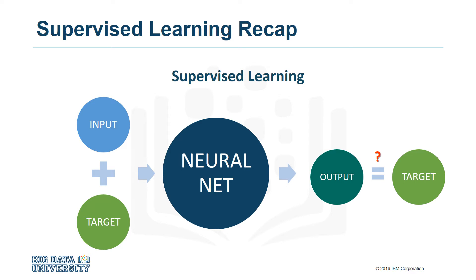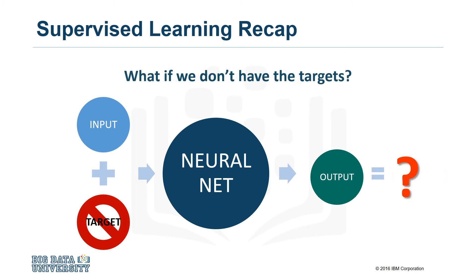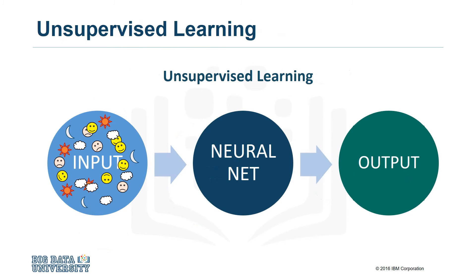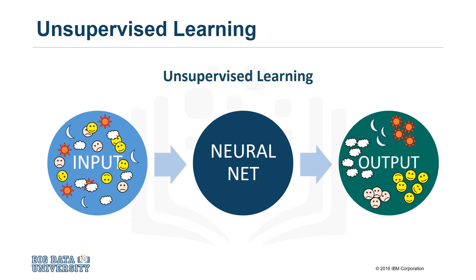But it might be the case that we don't have any output targets at all. This is when we would apply unsupervised learning techniques. With unsupervised learning, the network only receives the input data. There are no output targets or rewards or punishments for its results. The goal of unsupervised learning is to find patterns in the data and to build new and useful representations of it.